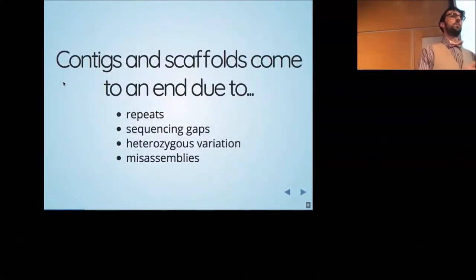In de novo genome sequence assembly, when a contig comes to an end, it's typically for one of four reasons: because you've reached a large repeat, a repeat that's larger than your library size; because there's a gap in sequencing; possibly due to large-scale heterozygous variation like structural variation; or just due to a misassembly, putting the wrong two reads together.